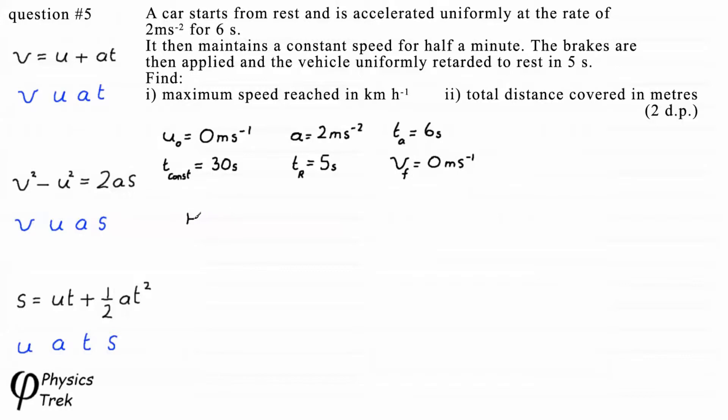This is the accelerated part of the motion. U₀ equals 0 m/s, then we have V_const, the maximum velocity, and the acceleration a at 2 m/s². The time for acceleration tₐ equals 6 seconds. The second part of the motion is when the velocity is constant. The final part is with velocity Vf equal to zero. The time while velocity is constant is t_const which equals 30 seconds.